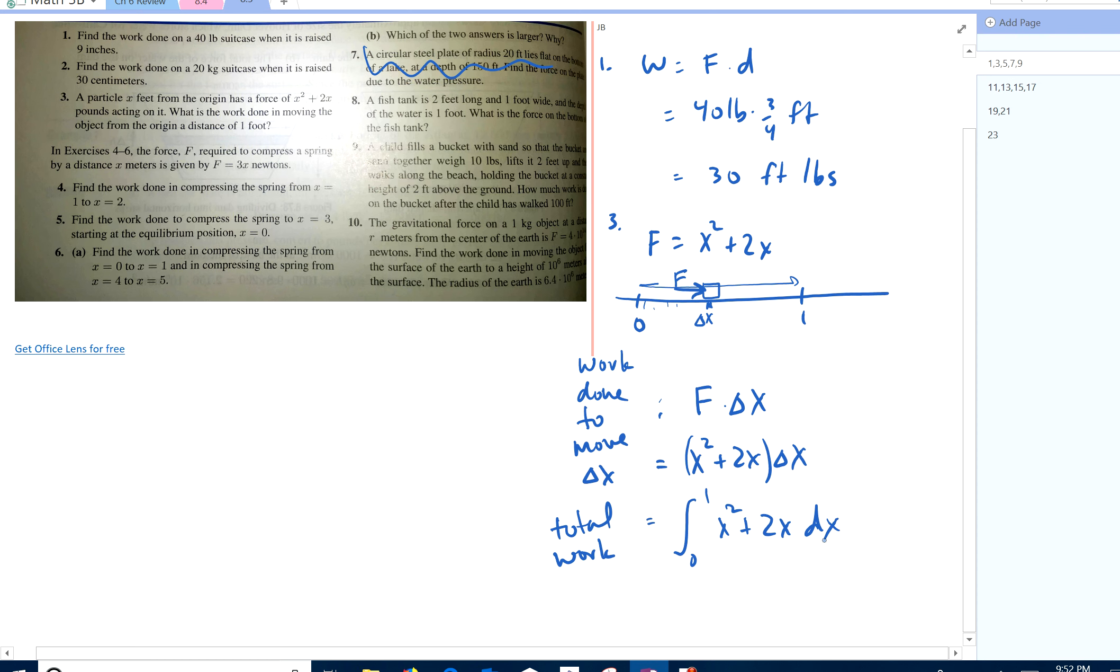And if you do that, you end up getting 1 and 1 third foot pound. Okay, 5. Find the work done to compress a spring. They tell us this formula for compressing a spring.